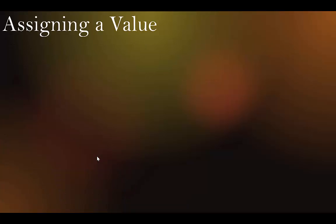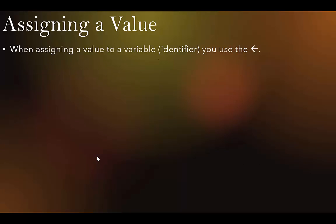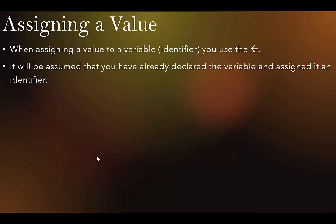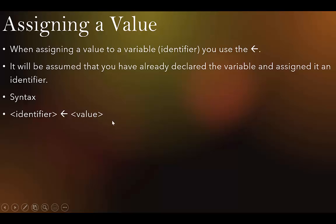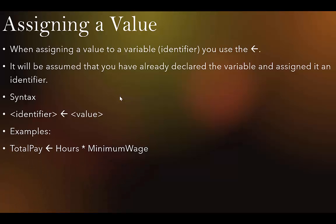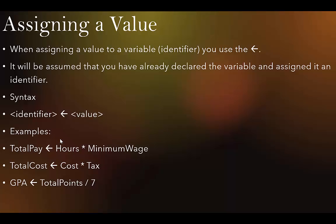When assigning a value to a variable, you use the arrow key pointing to the left — not the equal sign. It will be assumed you have already declared the variable. The syntax is: identifier ← value. For example: TotalPay ← Hours * MinimumWage, TotalCost ← Cost * Tax, GPA ← TotalPoints / 7. We use that left arrow key to assign a value.